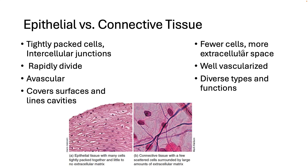Just as a recap, epithelial tissues — you can see on the left-hand side — consist of very tightly packed cells that are held together with a bunch of different types of intracellular junctions. These cells cover surfaces and line cavities in the body. They tend to rapidly divide because they're constantly getting damaged, and they are avascular, which means they don't have a very good blood supply.